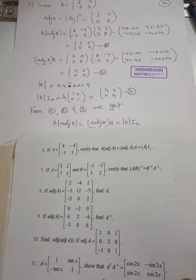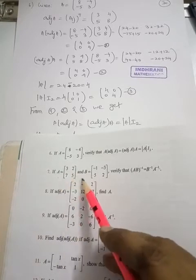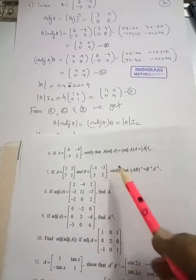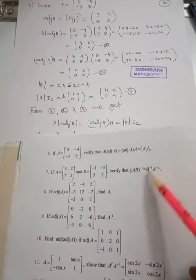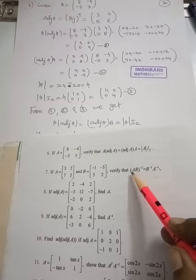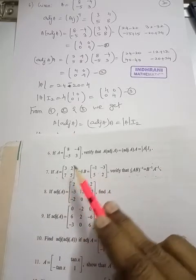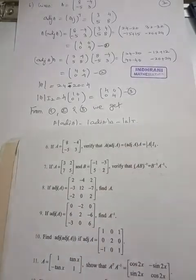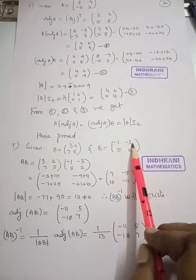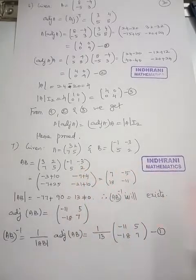Now we are going to see question number 7 in exercise 1.1. If A is equal to a 2×2 matrix with first row elements 3, 2 and second row elements 7, 5, and B is equal to a 2×2 matrix with first row elements minus 1, minus 3 and second row 5, 2 — verify that AB whole inverse is equal to B inverse into A inverse. This formula is very important. We want to verify AB whole inverse equals B inverse into A inverse using these two given matrices. So I am going to start with the given A matrix and B matrix. Now find out A into B, that is the ordinary multiplication of two matrices.